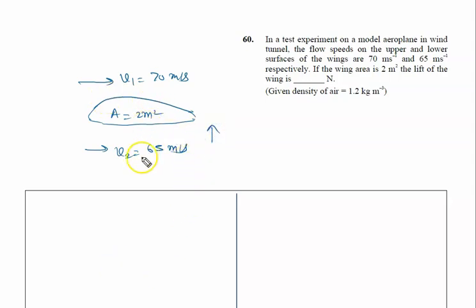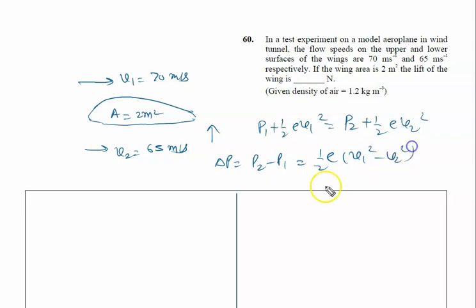We will apply Bernoulli's theorem in the upper region as well as the lower region. We can write P₁ + ½ρV₁² = P₂ + ½ρV₂². So the pressure difference P₂ - P₁ is ½ρ(V₁² - V₂²).